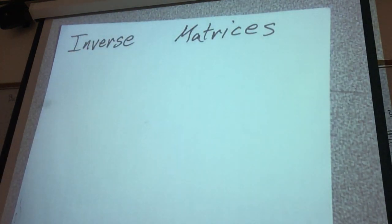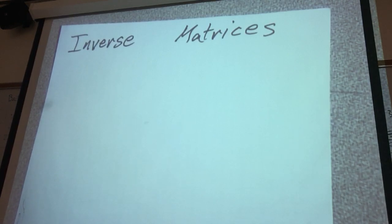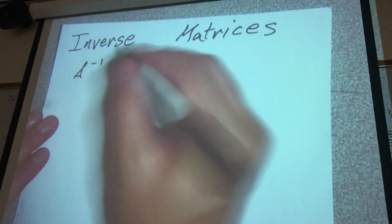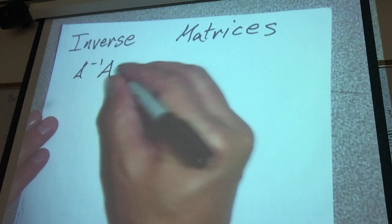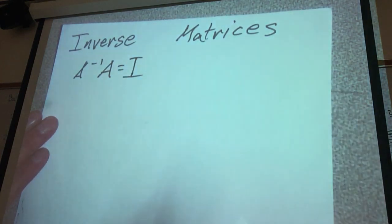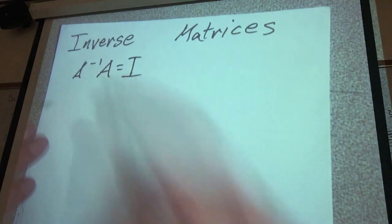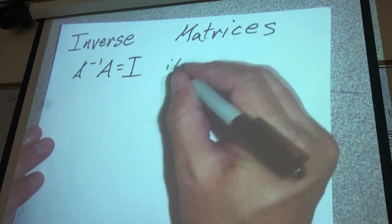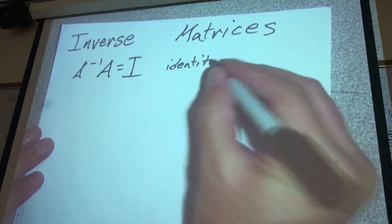So, inverse matrices. The first thing you need to know about an inverse matrix is that A inverse multiplied by A is going to equal I, so the inverse of A multiplied by A is going to equal I, which is the identity matrix.